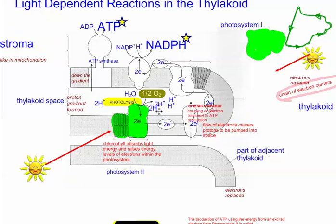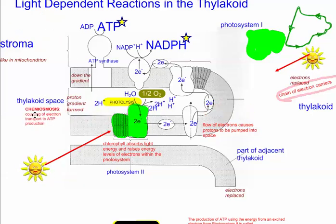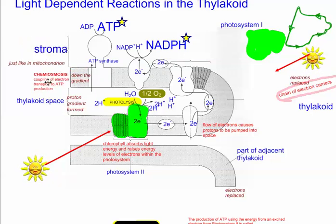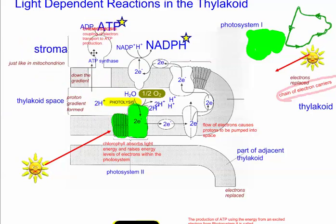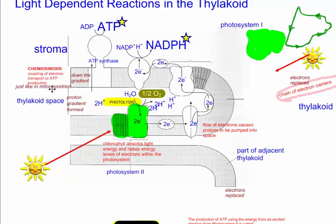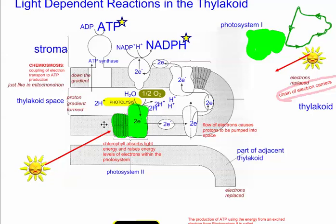This is called chemiosmosis — the coupling of electron transport to ATP production. ATP is also one of the main products of this entire process. The area outside the thylakoid is the stroma. This production of ATP by the diffusion of protons is the same process that occurs in cellular respiration in the mitochondria.